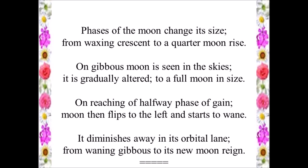Phases of the Moon change its size, from waxing crescent to a quarter moon rise. A gibbous moon is seen in the skies. It is gradually altered to a full moon in size. On reaching the halfway phase of gain.